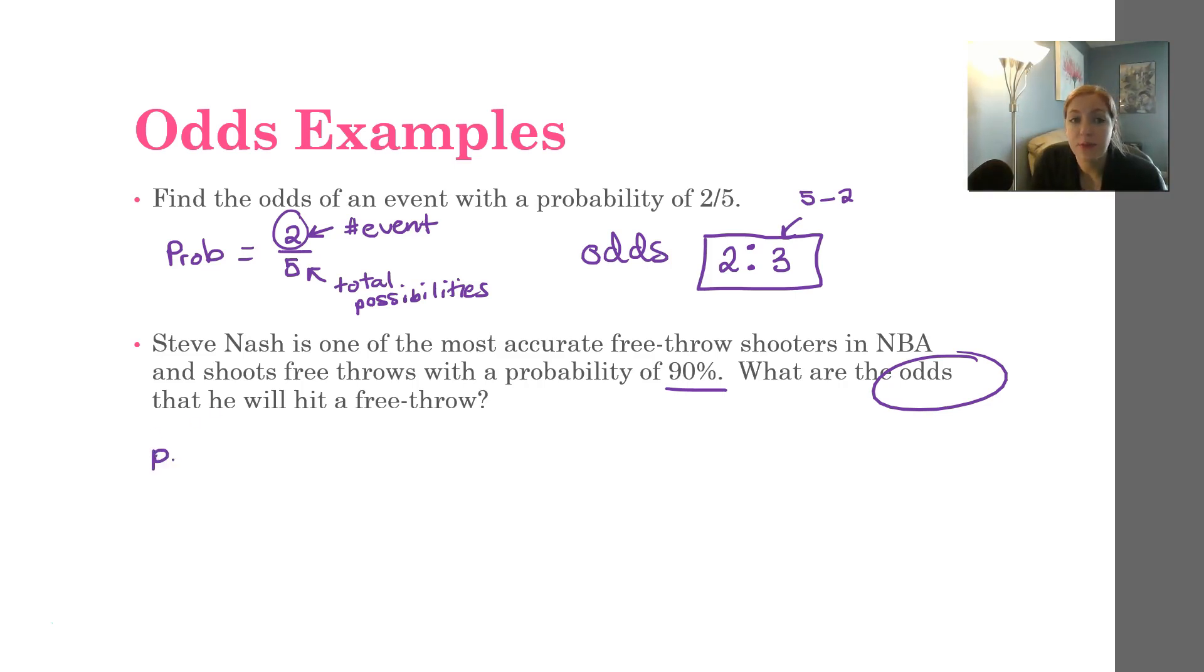Well, first thing we want to do is figure out the probability. The probability is 90%. 90% can be written as 90 over 100, which reduces, you can divide the top and bottom by 10, and it reduces to 9 over 10. It also can be written as 0.9. Just move that decimal back to get the decimal amount. So in the previous section in probability, we moved it to the right to turn it into a percent. To get it back to a decimal, we just do the opposite and move it to the left two spots to turn it back into a decimal.